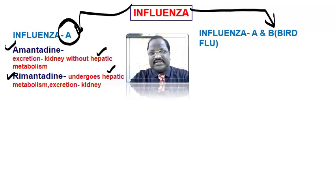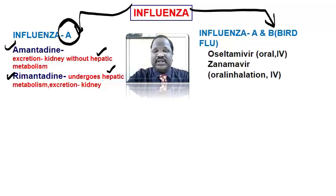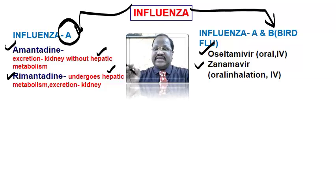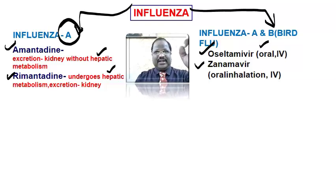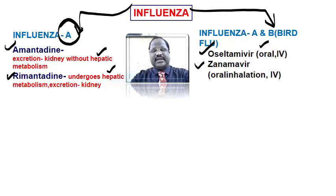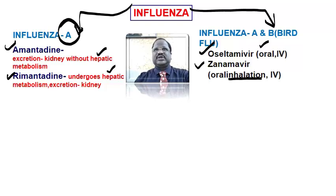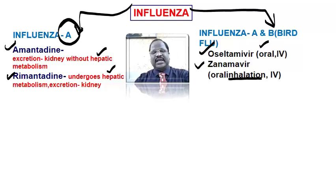For drugs useful for both influenza A virus and B virus, two important drugs are oseltamivir and zanamivir. Oseltamivir — note the spelling has an 'O' — is mainly given orally, though intravenous preparations are also being developed. Zanamivir is given by oral inhalation route. For MCQ purposes: oseltamivir is mainly oral, zanamivir is mainly oral inhalation. Oseltamivir is used for influenza including H1N1 and bird flu. The oseltamivir phosphate form is a prodrug, converted into oseltamivir carboxylate, which is the active form.